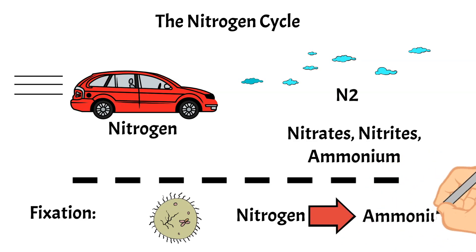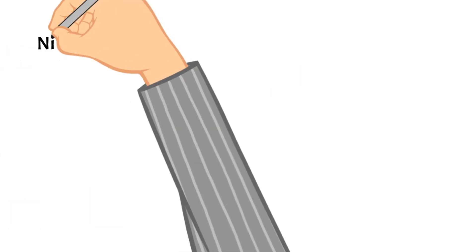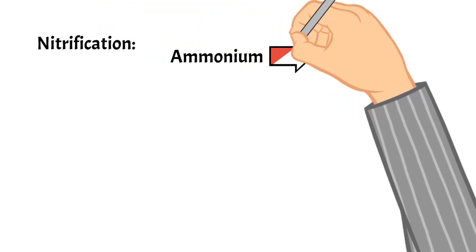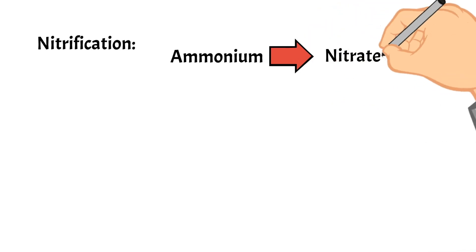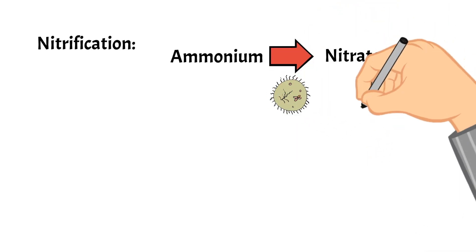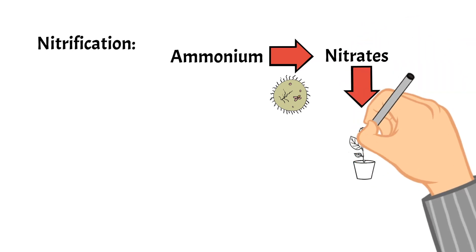Then nitrification happens and this is the process by which ammonium gets changed into nitrates by bacteria. Nitrates are the state of nitrogen that plants can absorb.